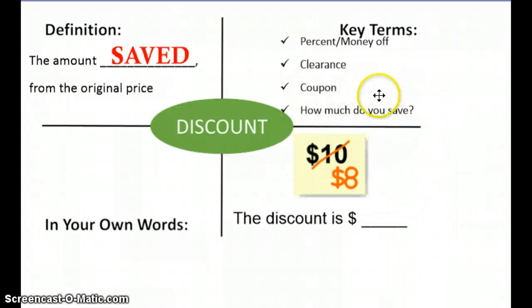This question right here, the discount answers that question how much money did you save? So in your own words you could put your definition here, and looking at this example, if something was originally ten dollars and now it is eight dollars, the discount is two dollars because two dollars is what we saved. Ten minus eight is two, we saved two dollars.